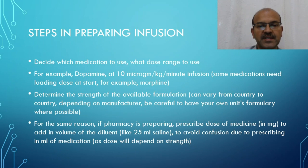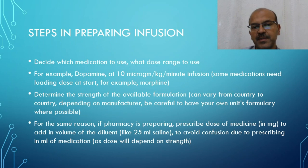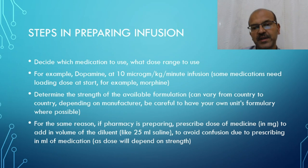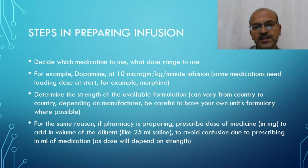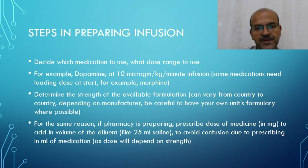We should determine the strength of the available formulation. This can vary from country to country depending on the manufacturer. Have your own unit's formulary where possible, but the pharmacy can check that for you. As long as you don't prescribe in mL — you should be prescribing the dose in milligrams of the drug to be used.